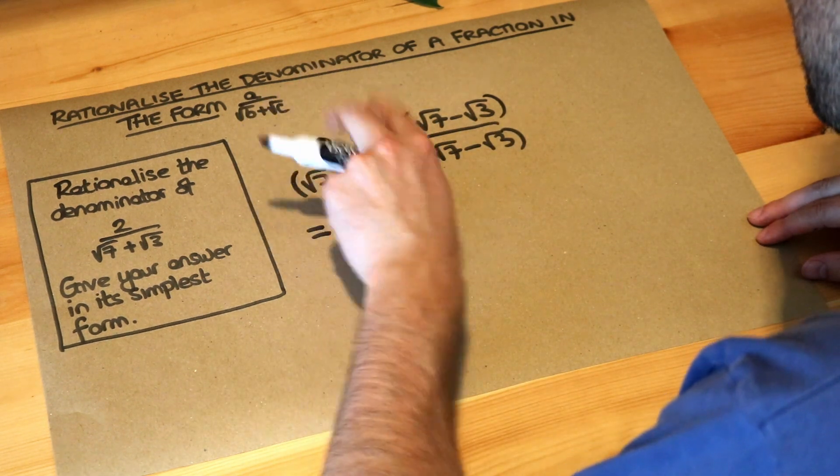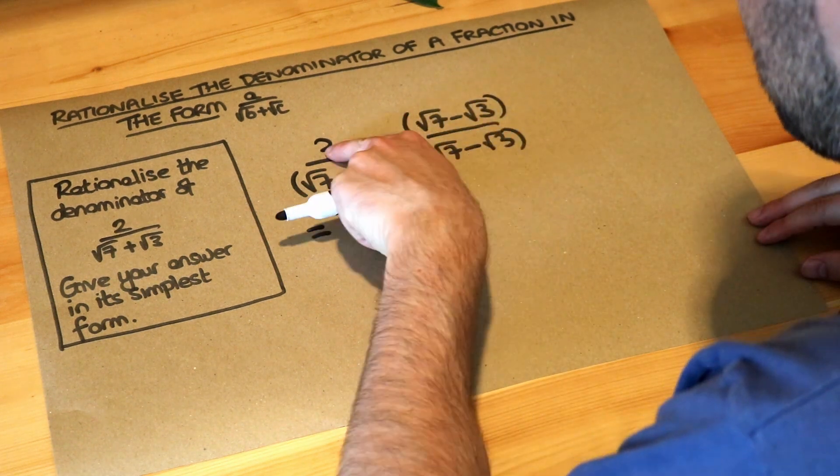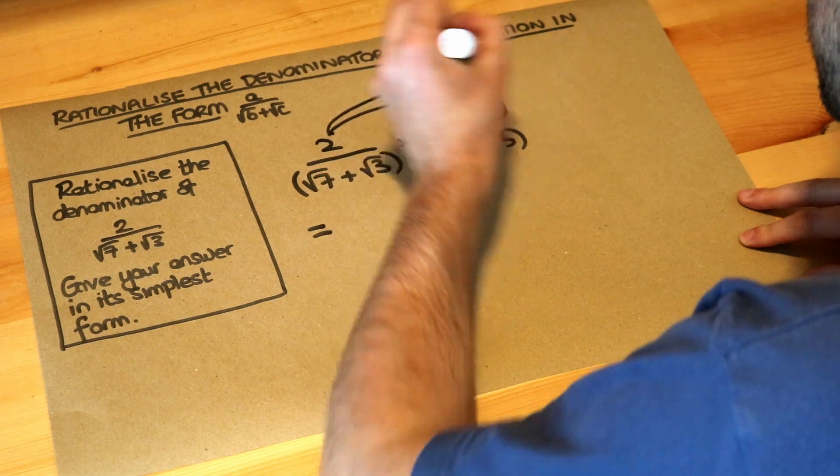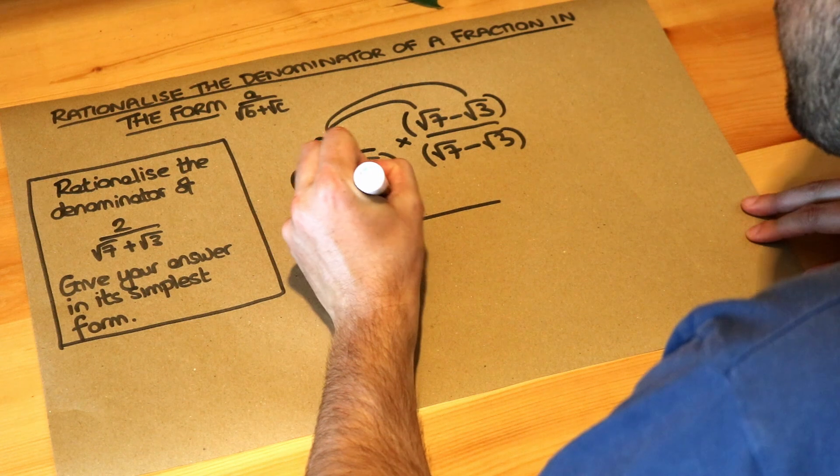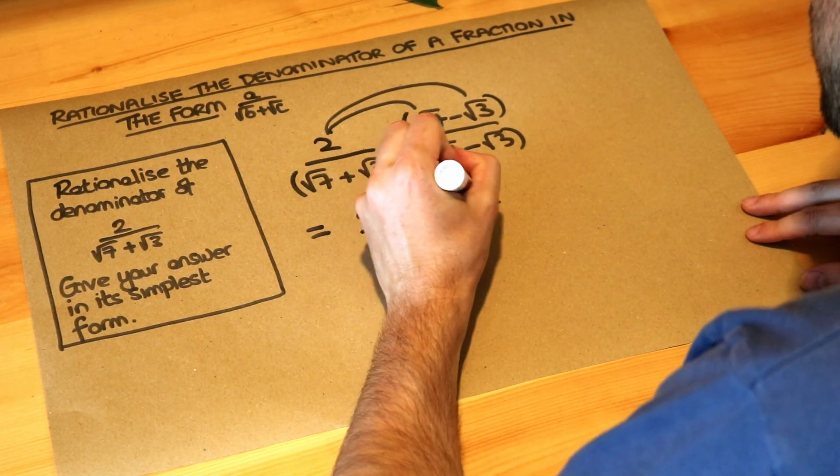We're going to do the 2 multiplied by the root 7 minus root 3. Because we've got a single bracket expansion here, we just do the thing in the front of the bracket multiplied by each of the things inside the bracket. So we have 2 times root 7, which is 2 root 7, and then 2 times minus root 3, which is minus 2 root 3.